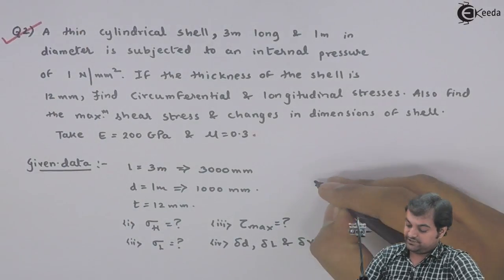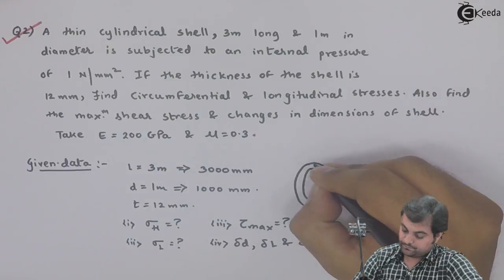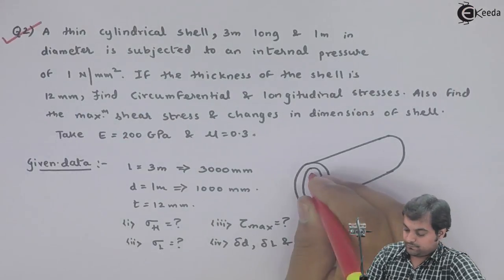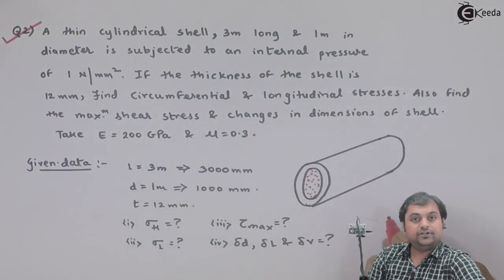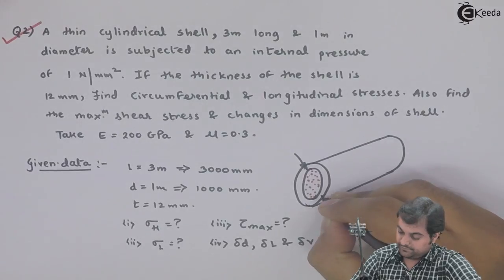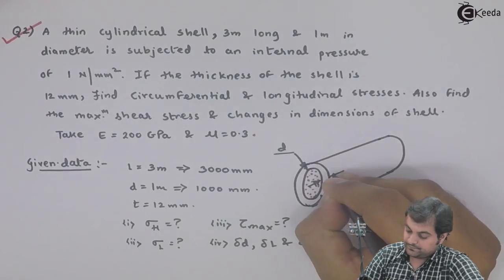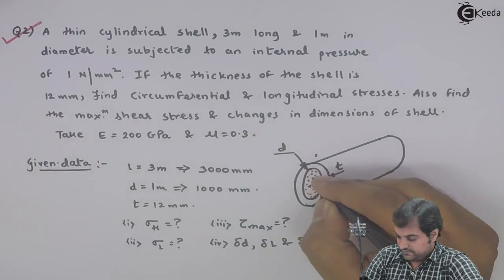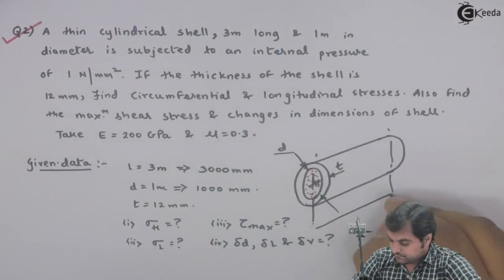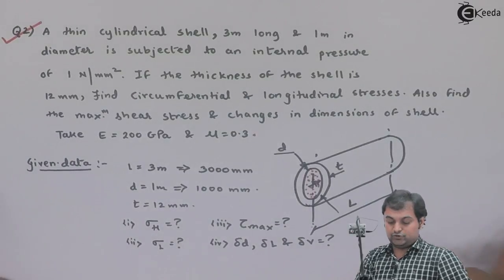Here I can draw a thin cylinder having internal fluid. Let small d be the diameter of this thin cylinder and thickness be small t. Here I have the length of the cylinder. Now let us try to solve this problem. The first question is hoop stress.